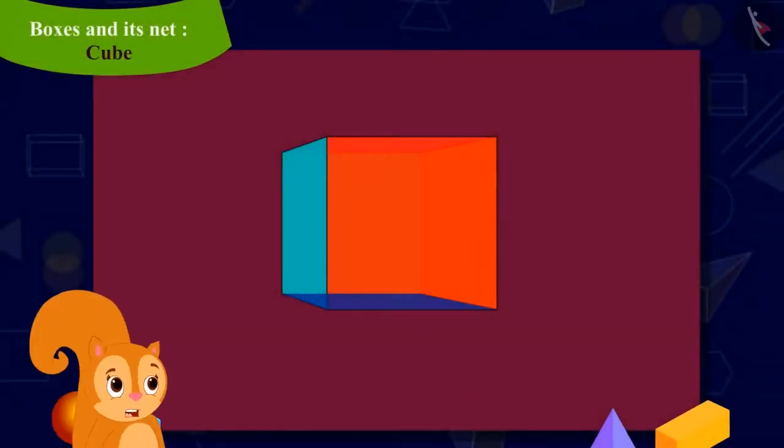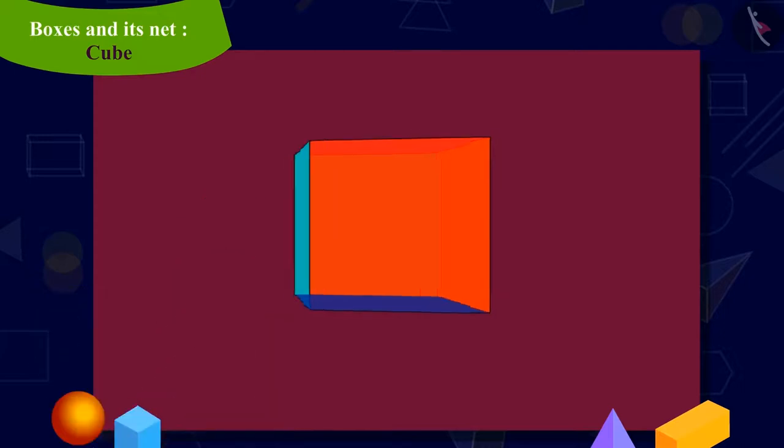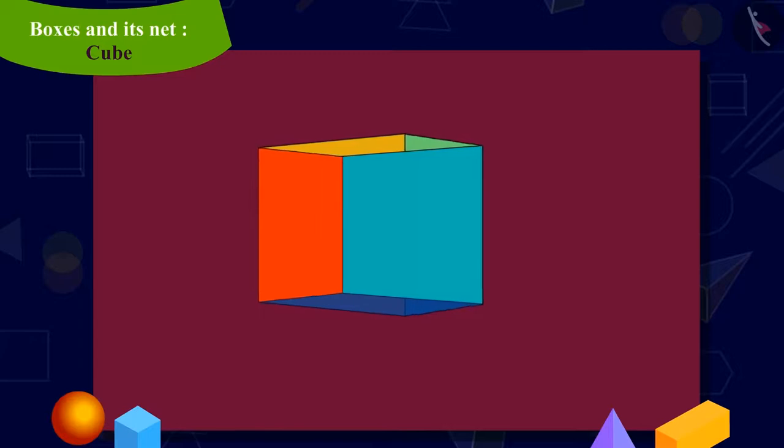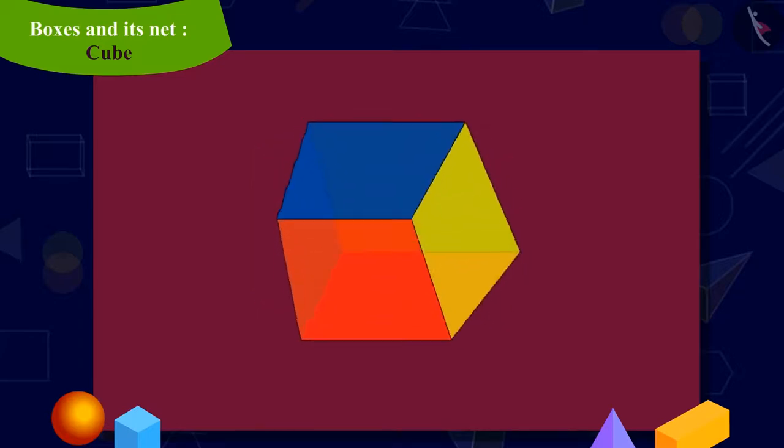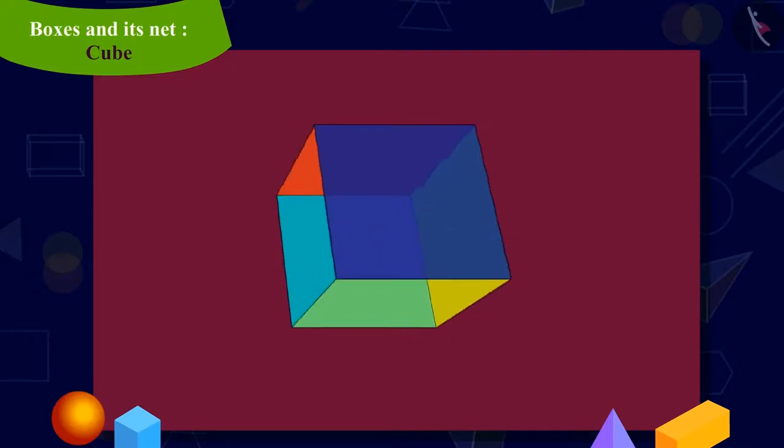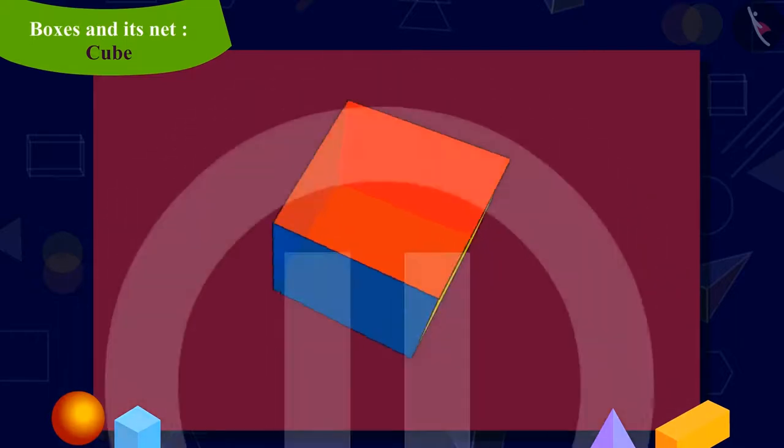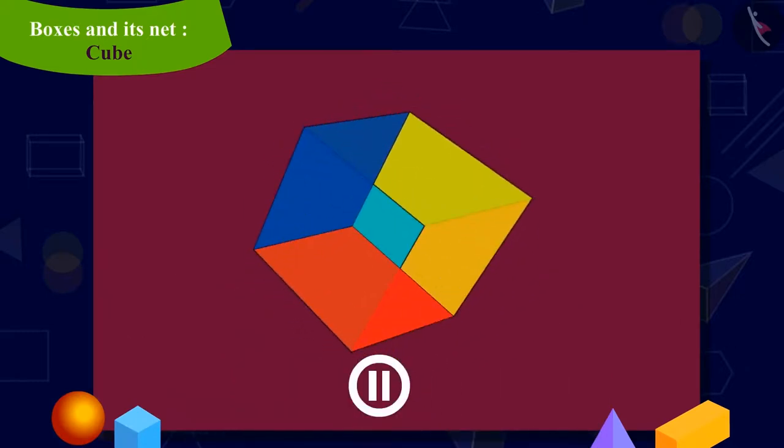Kids, can you help Chanda in making a third cube-shaped box? Keep in mind that all six faces in your figure should be square, and when folded, they should form a cube-shaped box. You can stop this video and try to make it in your notebook.